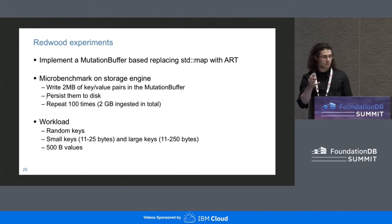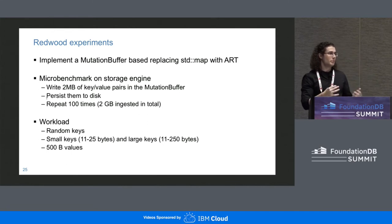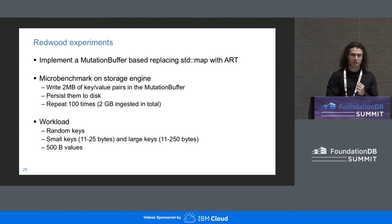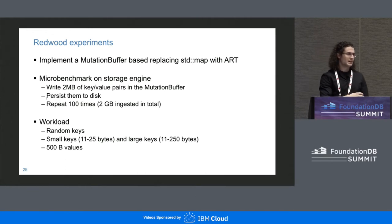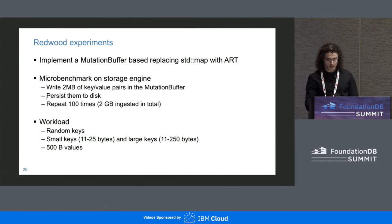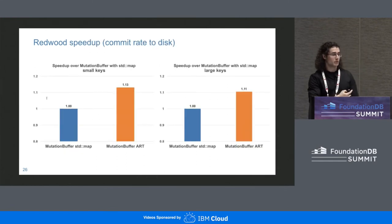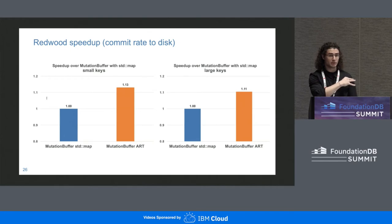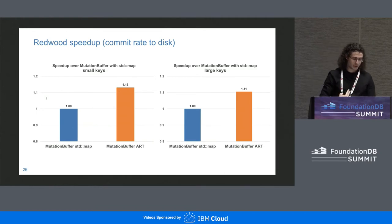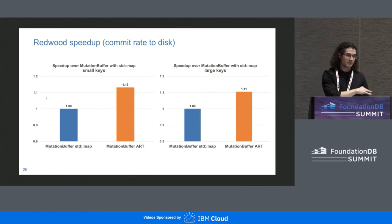We created a version of the mutation buffer using ART instead of the map, and compared it using a microbenchmark on the storage engine. The benchmark ingests two gigabytes of key-value pairs in 100 iterations with random keys, 500-byte values, and both small and large keys. Results show the speedup over Redwood in commit rate to disk ranges between 11% and 15% for our use cases.